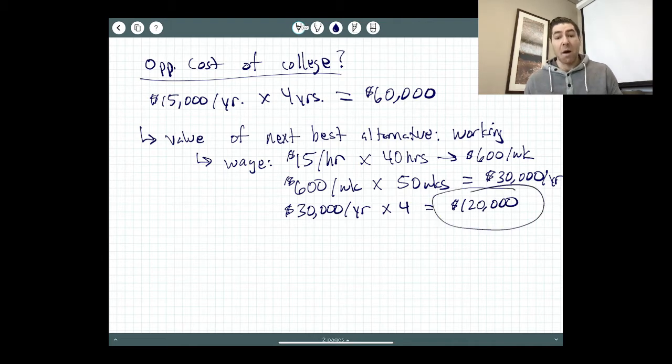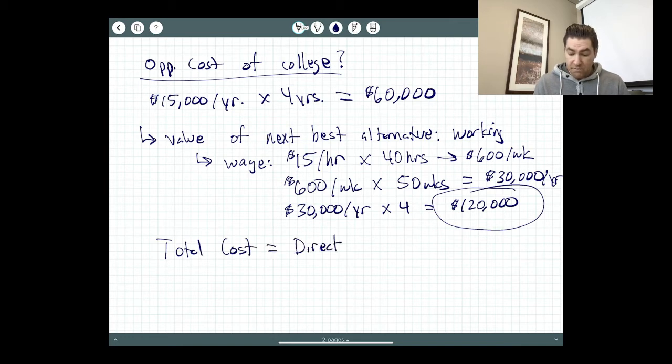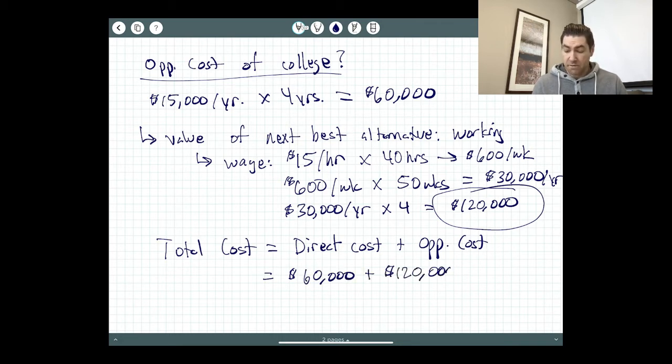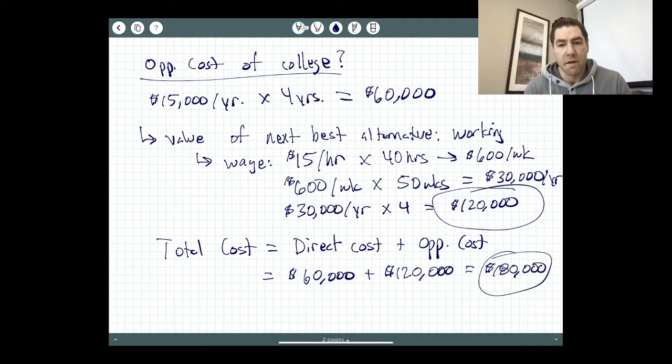And so for every year of college, I'm giving up the chance to make $30,000. And so multiplied by my four years here in college, that amounts to $120,000. So the opportunity cost of your time spent here in college is the foregone wages that you didn't earn. Here in my example, that's worth $120,000. So the total cost of college is the direct cost plus your opportunity cost.